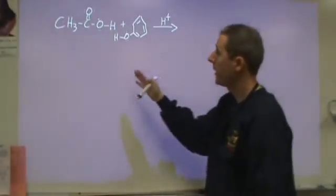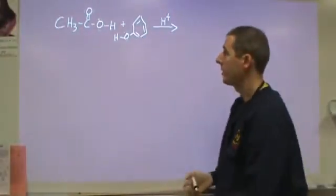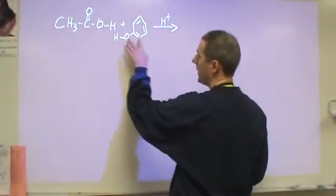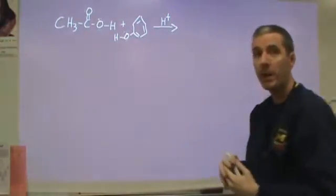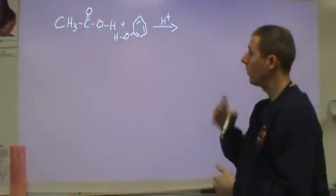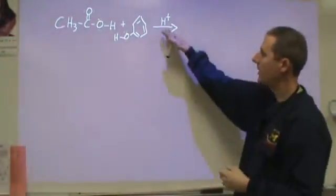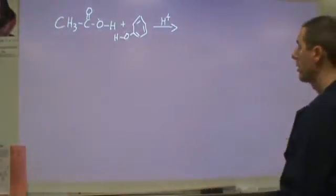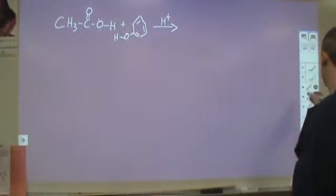I want to walk you through a Fischer esterification mechanism. We're going to take a carboxylic acid and an alcohol and combine the two, and we're going to lose a water molecule. This is going to be acid catalyzed, and I want to walk you through the curly arrow mechanism for how this works.